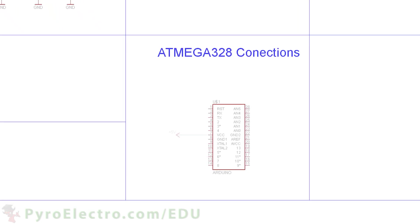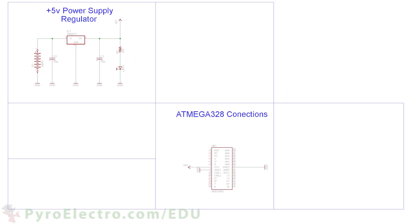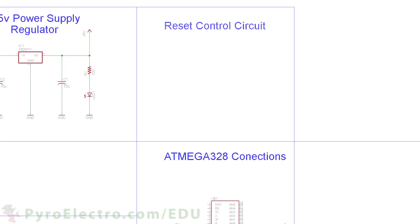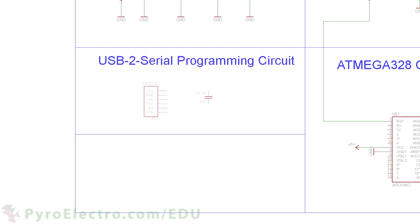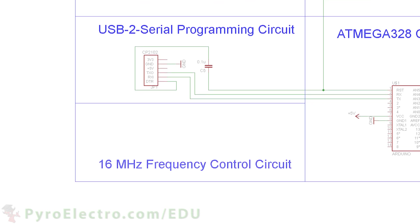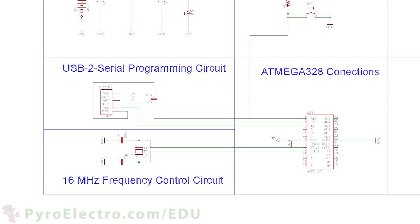Next, we'll connect the plus 5V power and ground to the microcontroller. The reset control consists of a push button connected to pin 1 of the microcontroller and then to ground. Additionally, a pull-up resistor is added to pin 1. A USB to serial converter module connects to the TX and RX pins of the microcontroller and also connects to ground. The DTR pin connects through a 0.1 microfarad capacitor to pin 1. A 16 MHz crystal and two 22 pF capacitors connect to X1 and X2 of the microcontroller, forming the frequency control circuit.